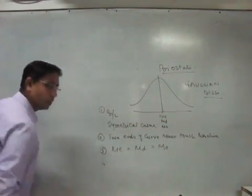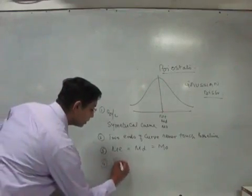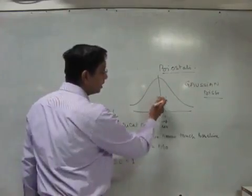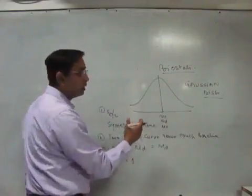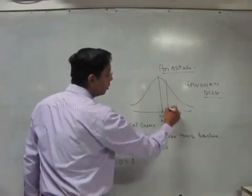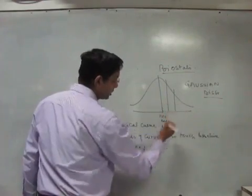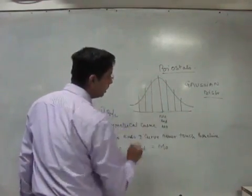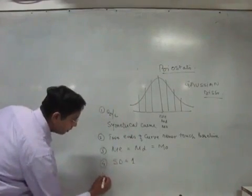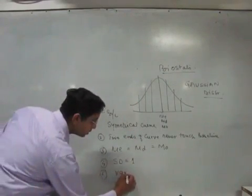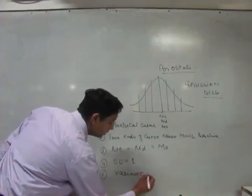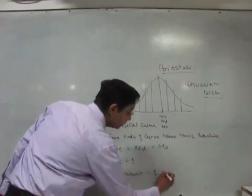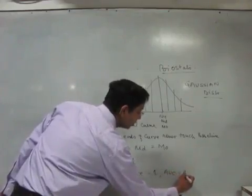Fourth point: the standard deviation is equal to 1. In a normal distribution curve, the standard deviation increments in units of 1. Fifth point: the variance — given by the square of the standard deviation — is also equal to 1, and the total area under the curve is equal to 1.